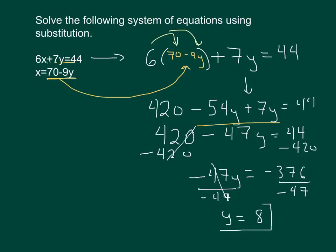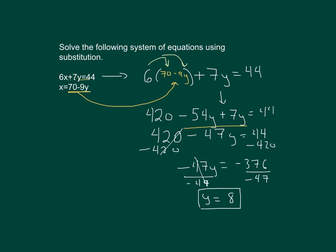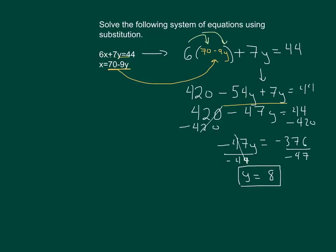So we figured out that y is equal to 8. Now that's just the first step in this problem. I still have to figure out the value of x because I want to find that solution, which remember is the intersection. So I'm going to zoom out a little bit here. Let's bring this over here. And now, since I know y is equal to 8, I'm going to do substitution one more time.